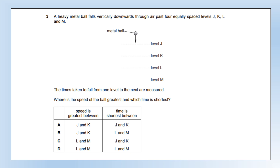A heavy metal ball falls vertically downwards through the air past four equally spaced levels J, K, L, and M. The times taken to fall from one level to the next are measured — from J to K, K to L, and L to M. Where is the speed greatest and which time is shortest? Those two go together: when it's travelling fastest, the time will be shortest, so they must correspond to the same transition. The shortest time is where it's fastest, and it's fastest at M because it's had the longest to accelerate. So the answer is option D.